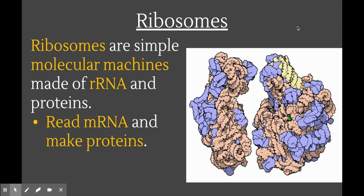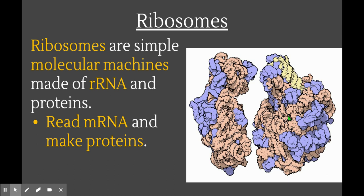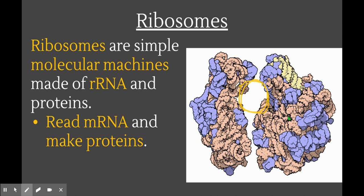The mRNA is going to leave through one of those nuclear pores and float around in the cytoplasm until it finds something called a ribosome. A ribosome is a special molecular machine made of a bunch of protein as well as a little bit of rRNA — you might remember that from the lecture about the different types of RNA. The purple and orange components you can see are all protein parts, and the little yellow part is the rRNA component of the ribosome. These two parts will essentially clamp down on the mRNA in the middle and read it.